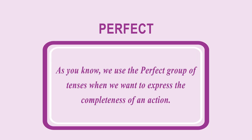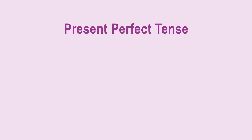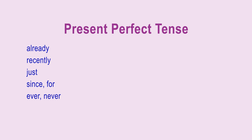We use the perfect group of tenses when we want to express the completeness of an action. When you talk about the present and want to use the following words, it is a signal that you should use the present perfect tense: already, recently, just, since, for, ever, never, yet, so far.